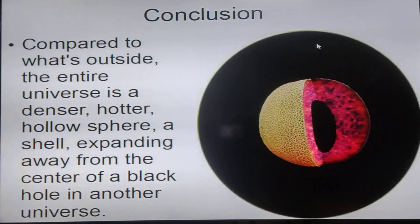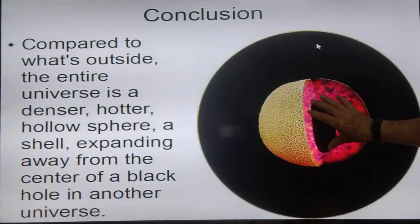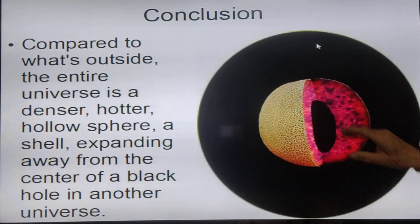So, in conclusion, compared to what's outside, the entire universe is a denser, hollow, hotter hollow sphere. It's basically a shell expanding away from the center of the black hole in another universe. So basically, this is the black hole, this is the universe itself, and it's expanding from the center point. Right here was where the universe got started, and from there it expanded. So it's just a shell expanding from one point, and it's expanding inside a black hole.